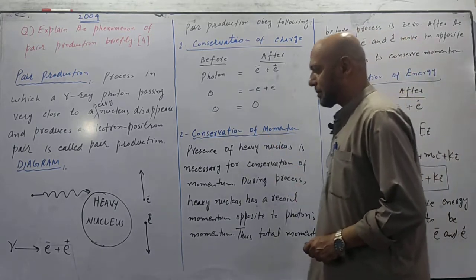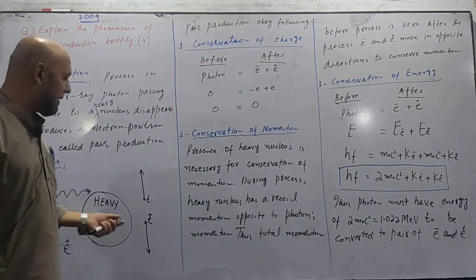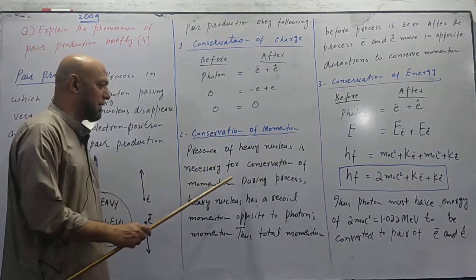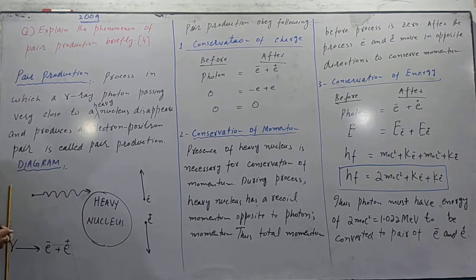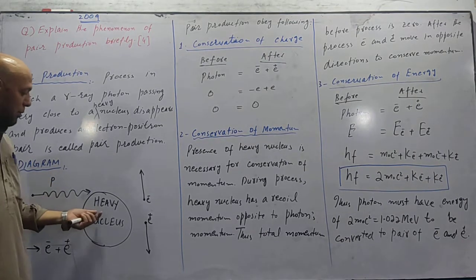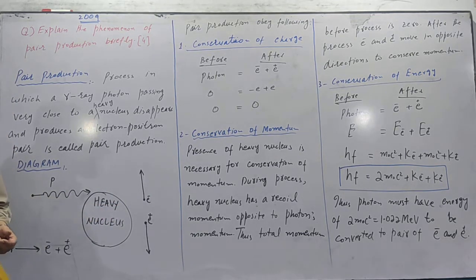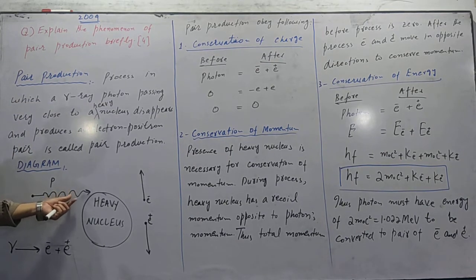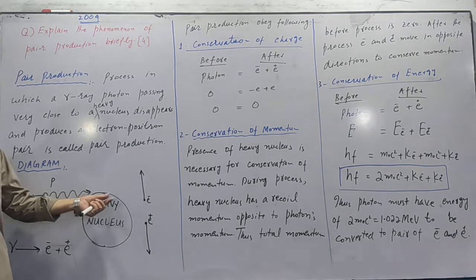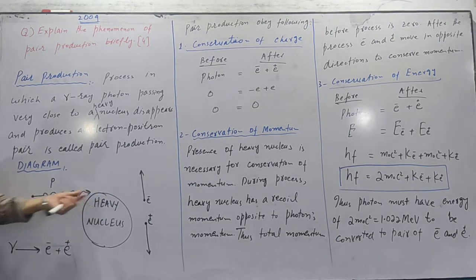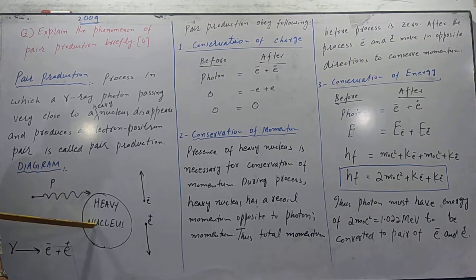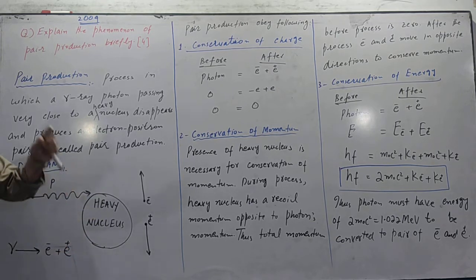Conservation of momentum. Presence of heavy nucleus is necessary for conservation of momentum. See, if we assume photon's momentum in this direction, then nucleus does recoil. If we fire a gun, there's a backward jerk. So photon targets the nucleus. The nucleus recoils. Its momentum in this direction - as much as photon's momentum, that much will be nucleus's momentum. Direction will be opposite. Therefore total momentum becomes zero.